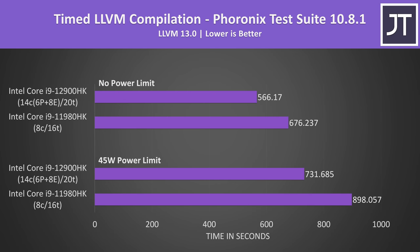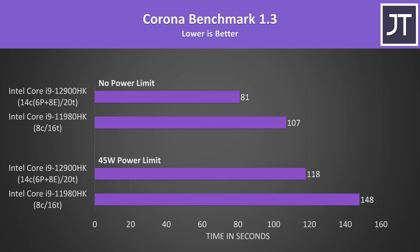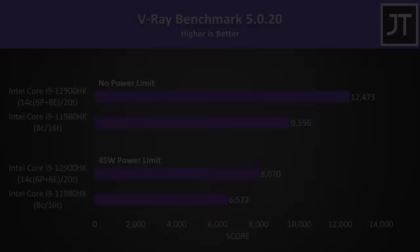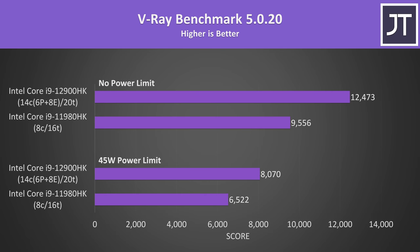LLVM compilation is the only other task run under Linux, and the differences were a little smaller compared to the kernel compile test. These tests benefit from more threads, so it's no surprise that 12th gen was ahead. The Corona renderer uses the processor to render out a scene. Again the higher thread count from 12th gen helps out here, allowing the 12900HK to complete the task over 30% faster with no power limit, or 25% faster when both are power limited. The V-Ray test is similar and has about the same margins. The fact that the 12900HK can score 55% higher than itself at 45 watts really goes to show how much power limit can affect performance.